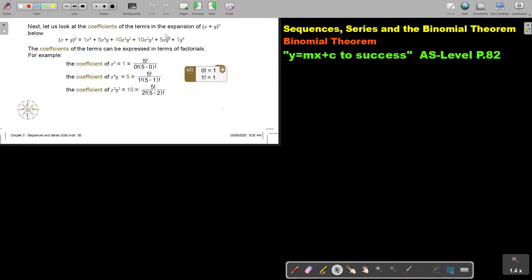This is what we get. Can you remember? 1, 5, 10, 10, 5, 1 from Pascal's Triangle. And then 5, 4, 3, 2, 1 and 0, 1, 2, 3 up to 5. The coefficients of the terms can be expressed in terms of factorials, for example.